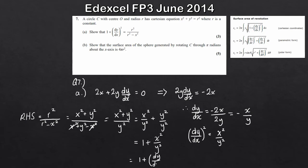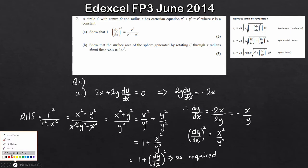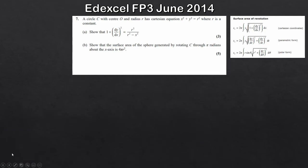So that's part a done — quite a bit of work for three marks, but there we go, as required. In part b we want to show that the surface area of the sphere generated by rotating C through π radians about the x-axis is 4πr². We're working in Cartesian, so we use the same top formula.